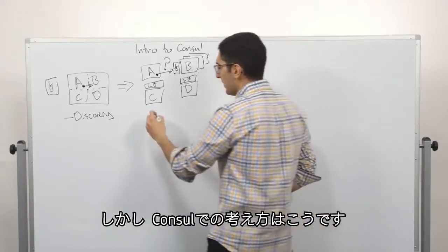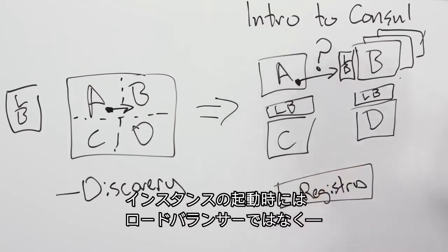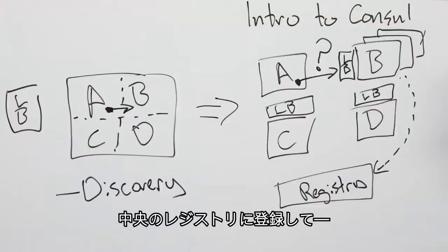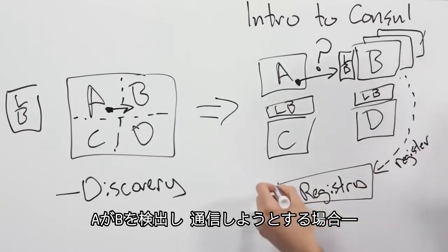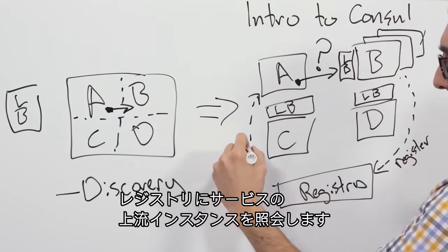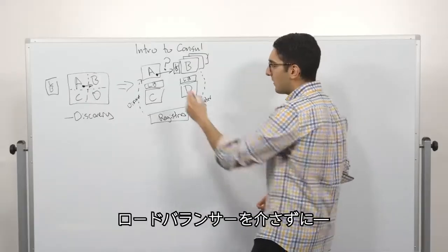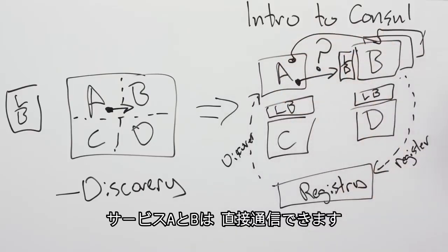The way we think about it in Consul is how do we solve this by providing a central service registry? So instead of using load balancers, when these instances boot, they get registered as part of the central registry. So it gets populated in here. So we do a register. And now, when A wants to discover and communicate with B, it queries the registry and says, where are all the upstream instances of this service? And now, instead of going through a load balancer, service A can directly communicate with an instance of B.